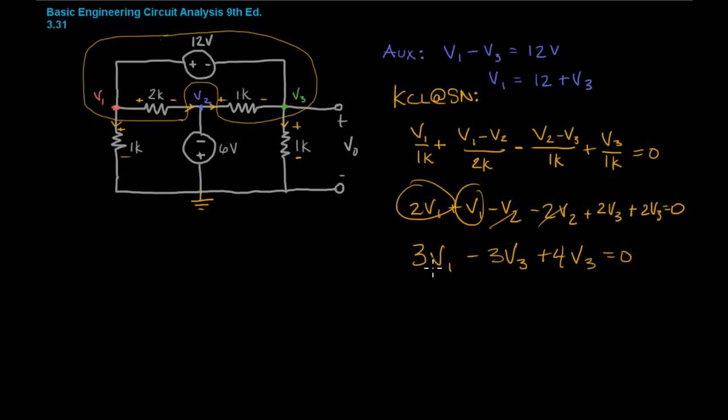We also have another auxiliary equation from this circuit at V2. V2 has to be negative six volts because of the polarity here, so V2 equals negative six volts. V2 is known so we can rewrite the equation in terms of V1.